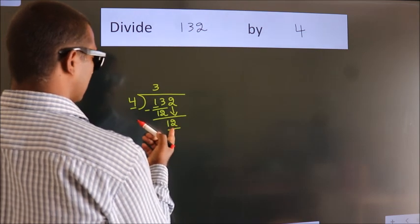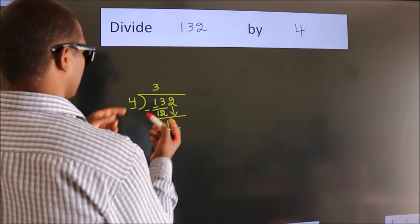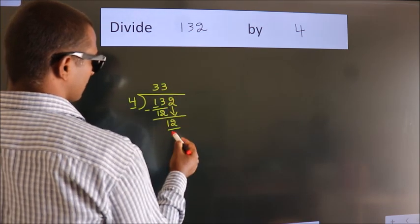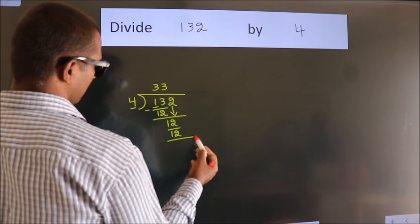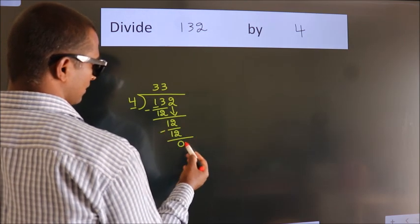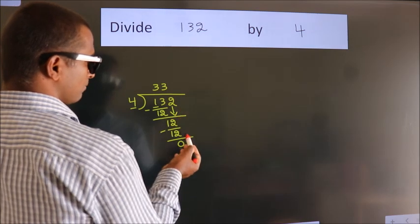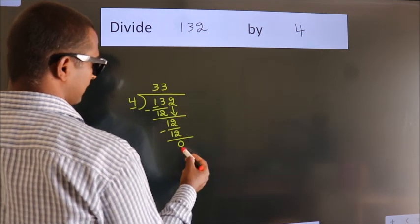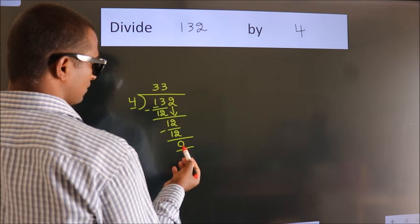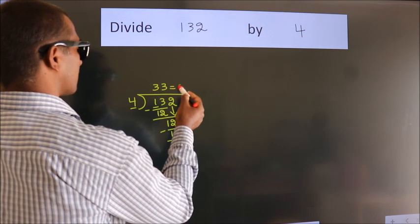When do we get 12? In the 4 table. 4 times 3 equals 12. Now we subtract. We get 0. After this, no more numbers to bring down. And we got remainder 0. So this is our quotient.